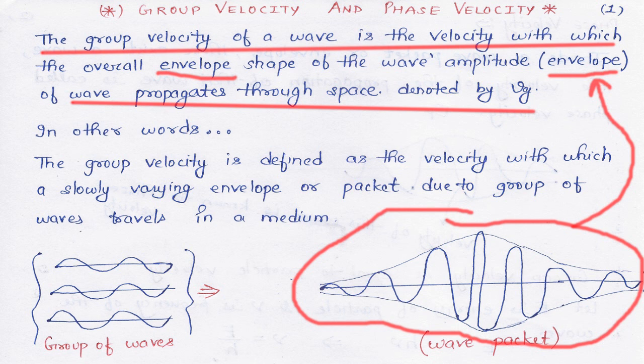It is denoted by Vg. This means the wave packet, its complete shape, the envelope type, travels with a certain velocity through space. This is called the group velocity.